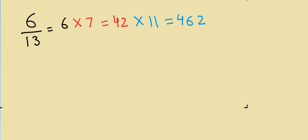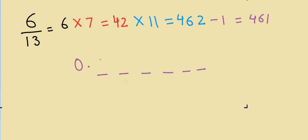The third and last step is we take 462 and subtract 1 from it, giving us 461. Now the answer should look like this: 0. followed by several decimal digits, where the first three digits will be 461.